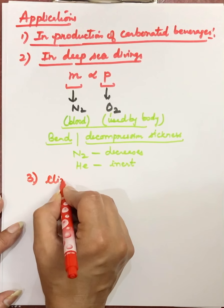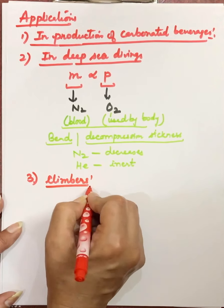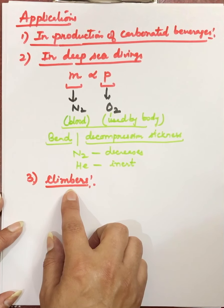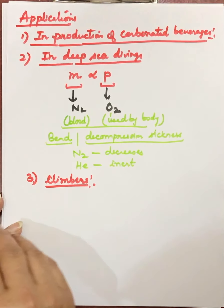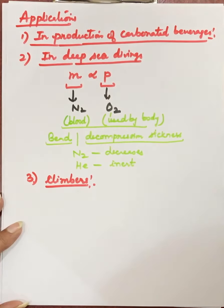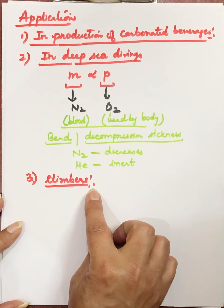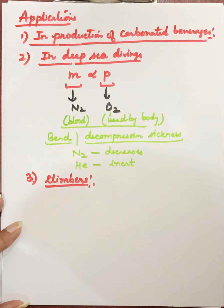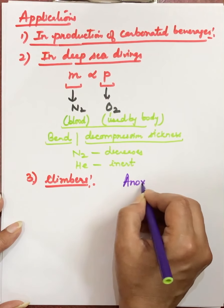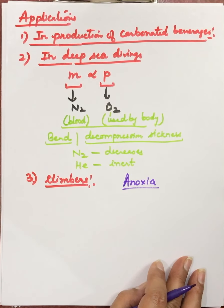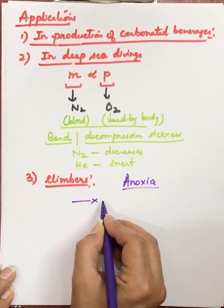The next application of Henry's Law is for mountain climbers and people living at high altitudes. As we go up, pressure decreases, so solubility of gases in blood decreases, meaning less oxygen is available. When people at high altitudes receive less oxygen, they experience a problem called anoxia, where the person is unable to think properly. This is another application of Henry's Law.